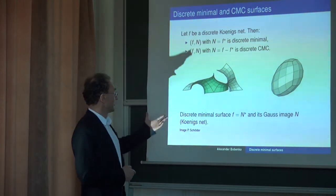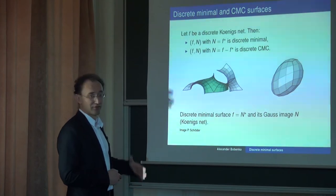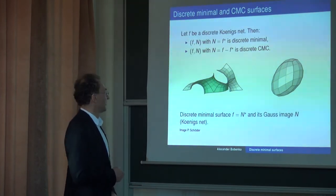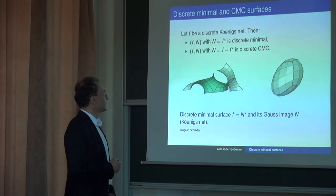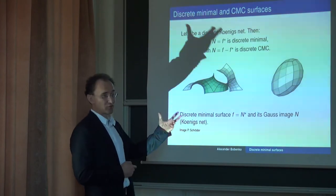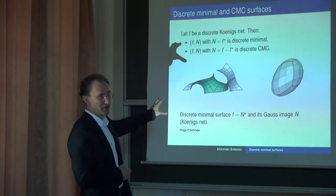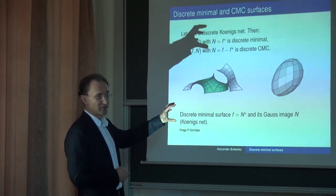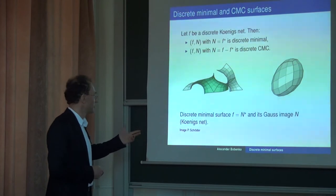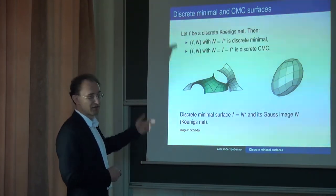We went too far with our generalizations. We should incorporate the fact that n is the Gauss map, and the Gauss map has to do with spheres. Our minimal surface is something we don't know much about, but the Gauss map should be a discrete sphere. So the next problem is: what are discrete spheres satisfying all these properties to be Koenigs nets?